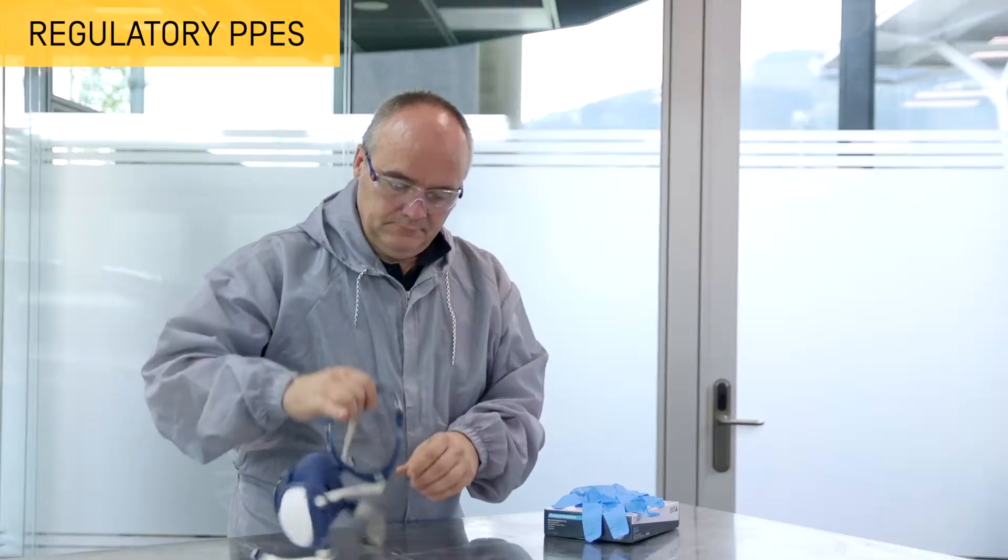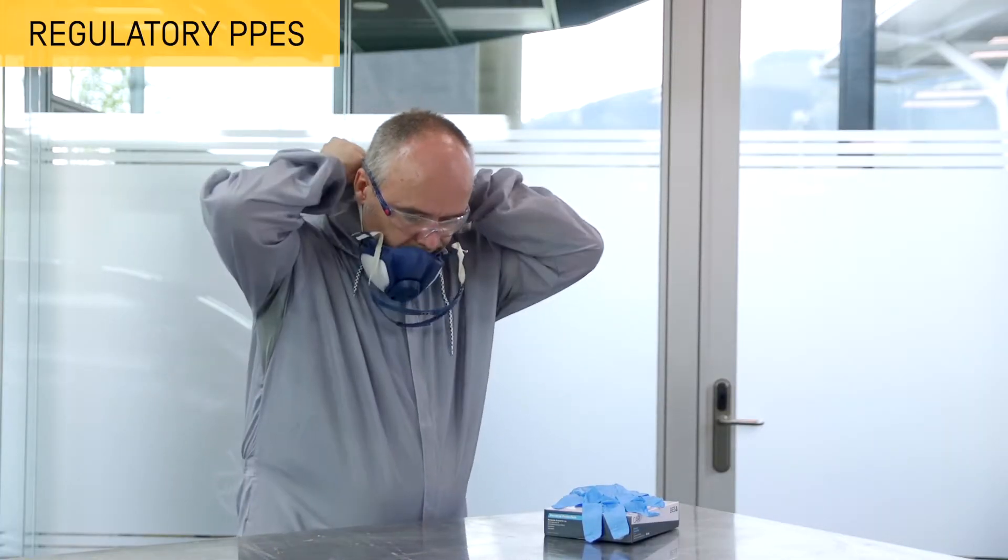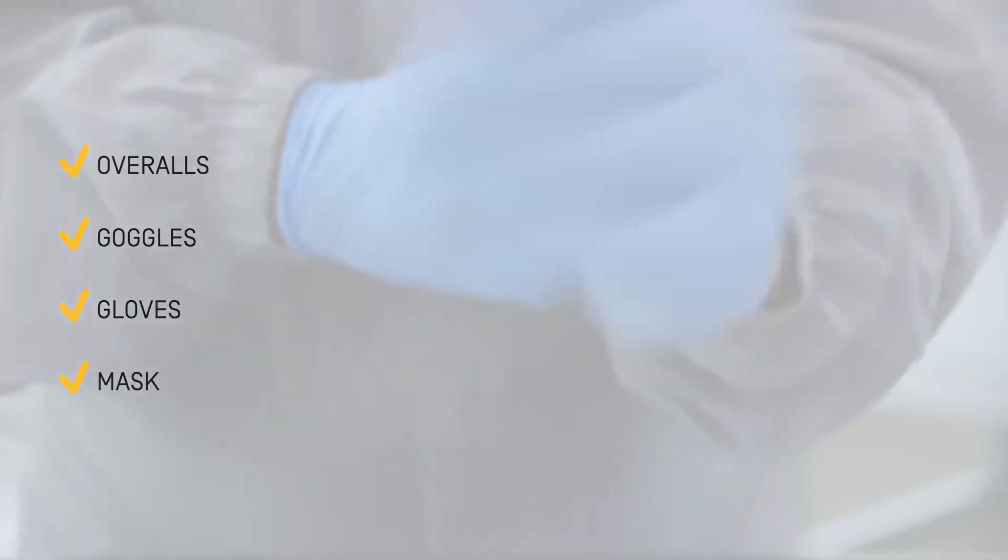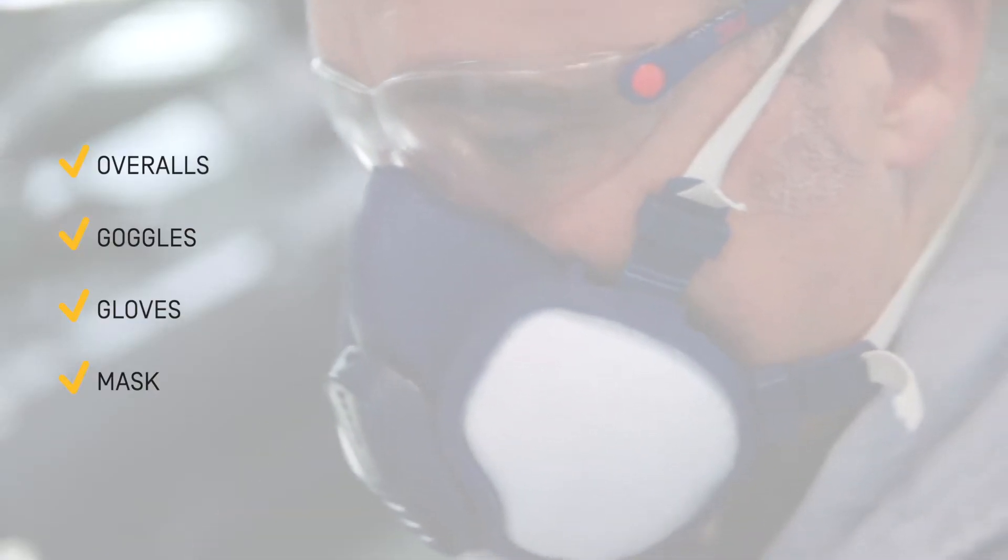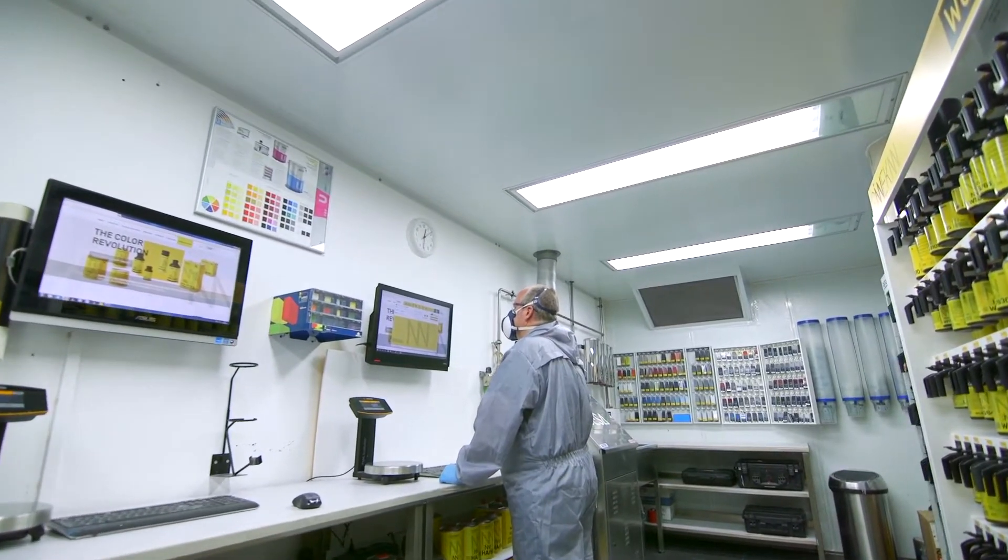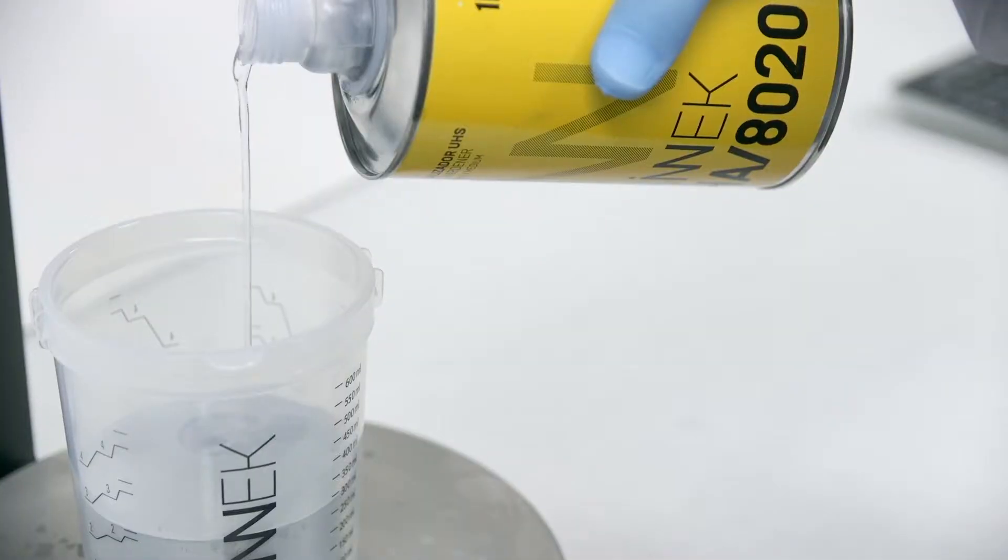To complete the mixing process in safe conditions, the required PPEs are overalls, safety goggles, gloves, and a mask. In addition, the mixing and storage area must be kept clean and tidy, with appropriate ventilation and without elements that hinder product and tool handling.